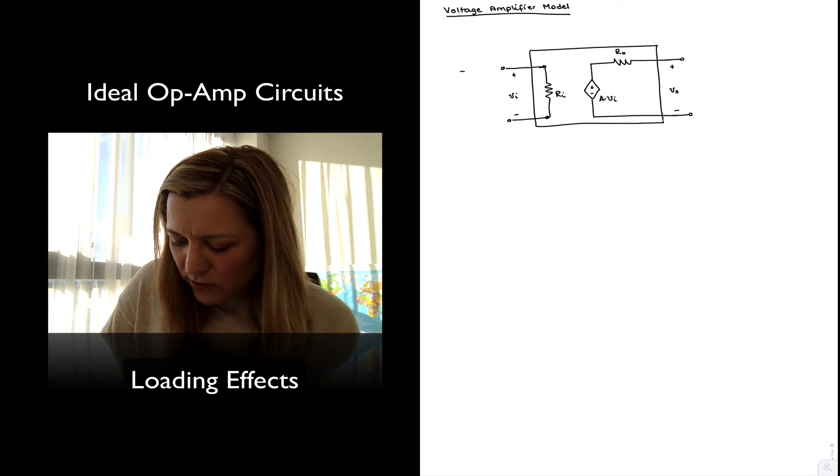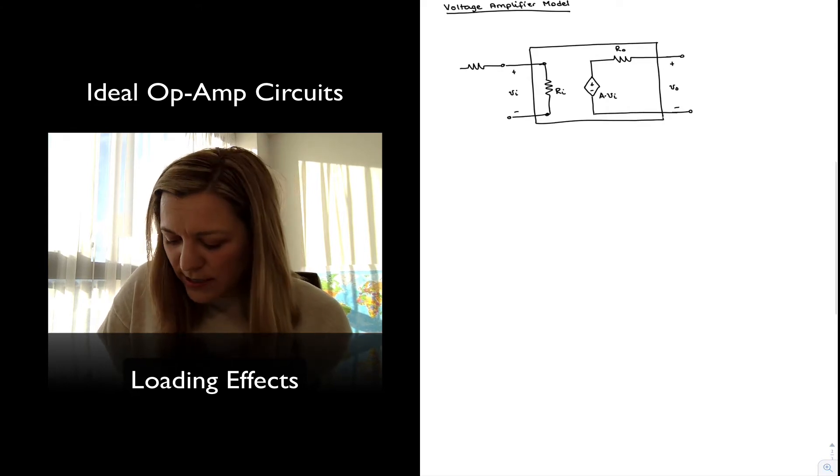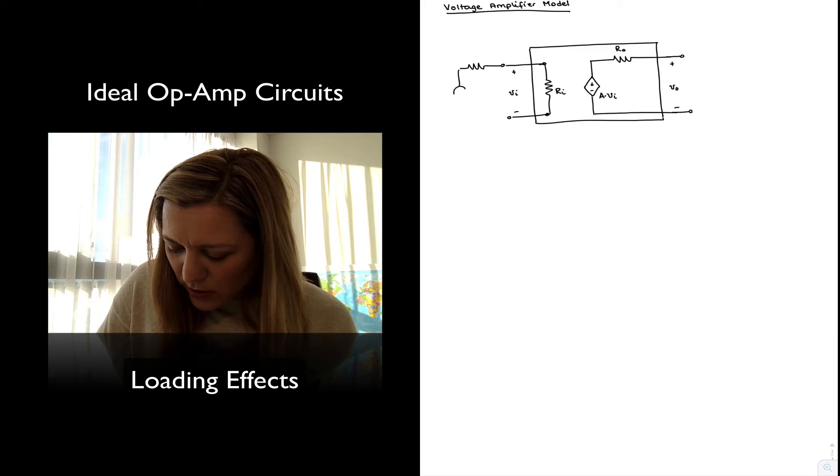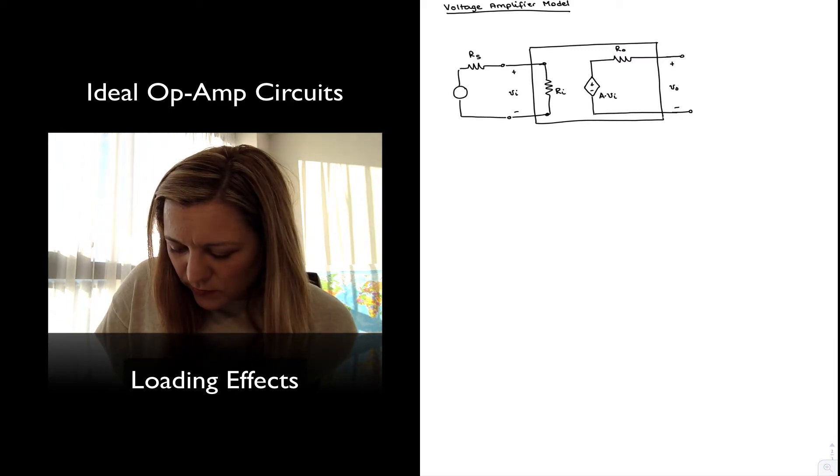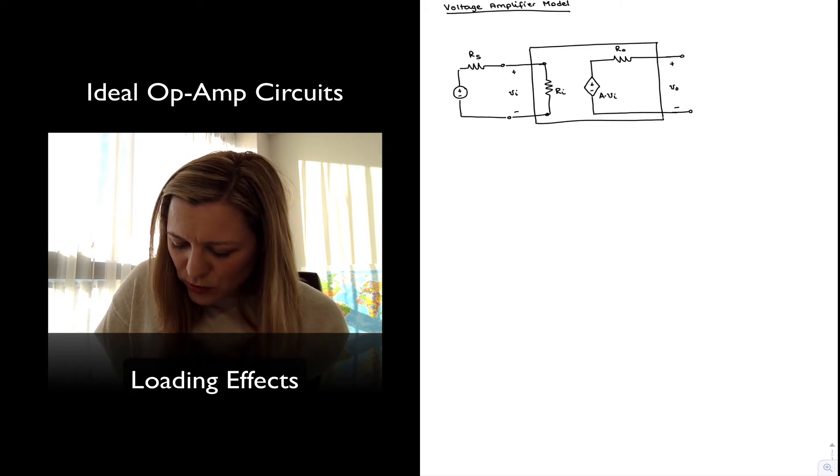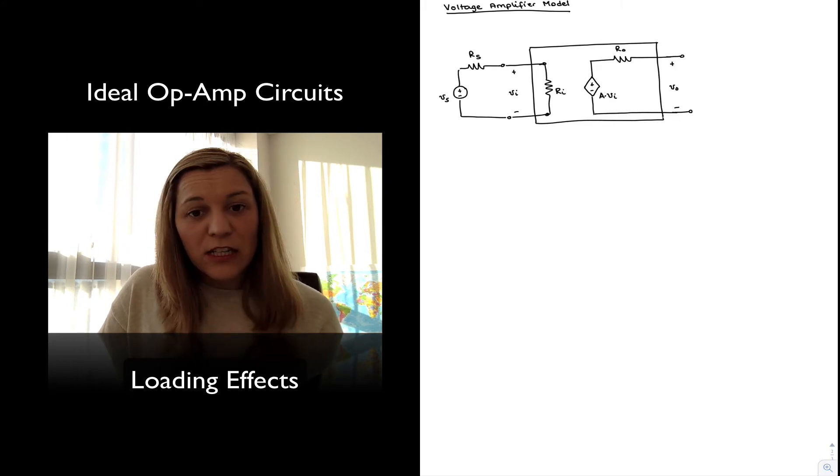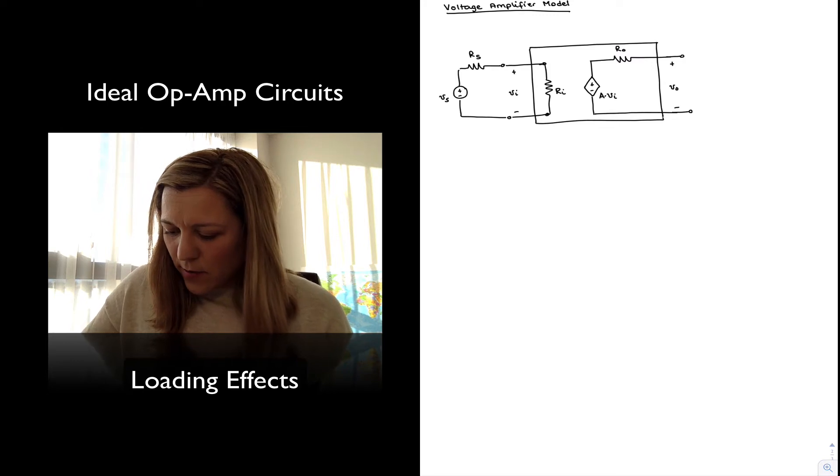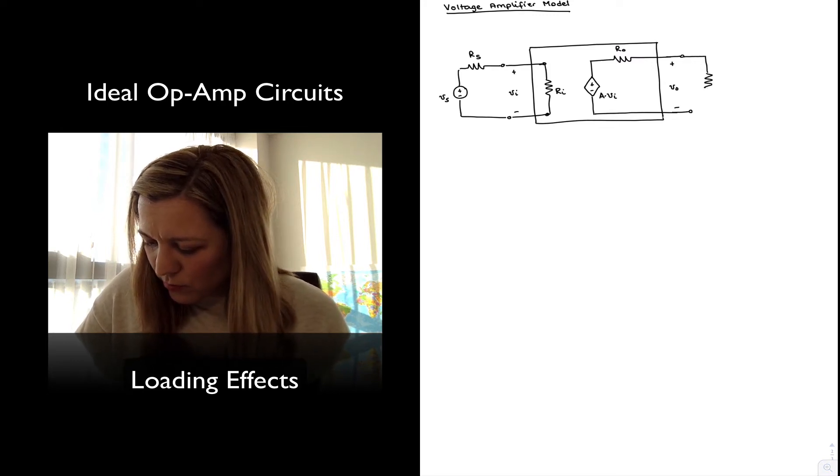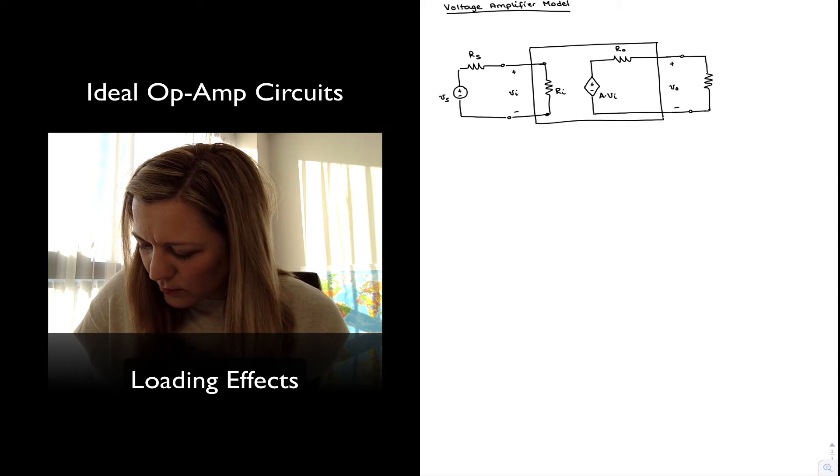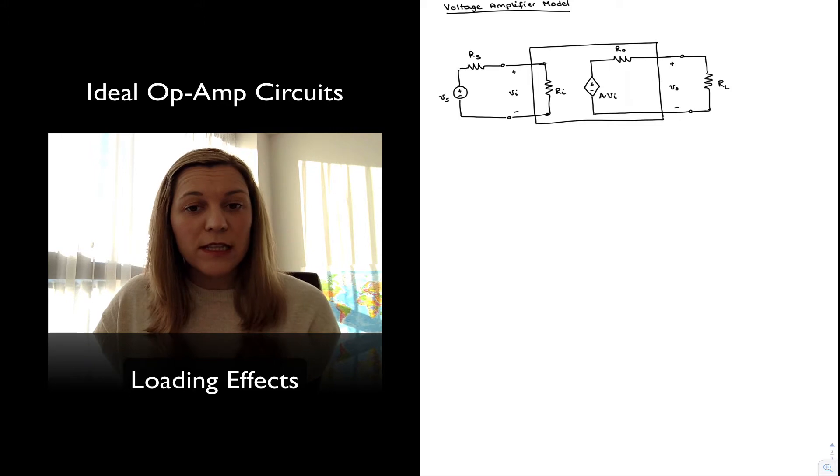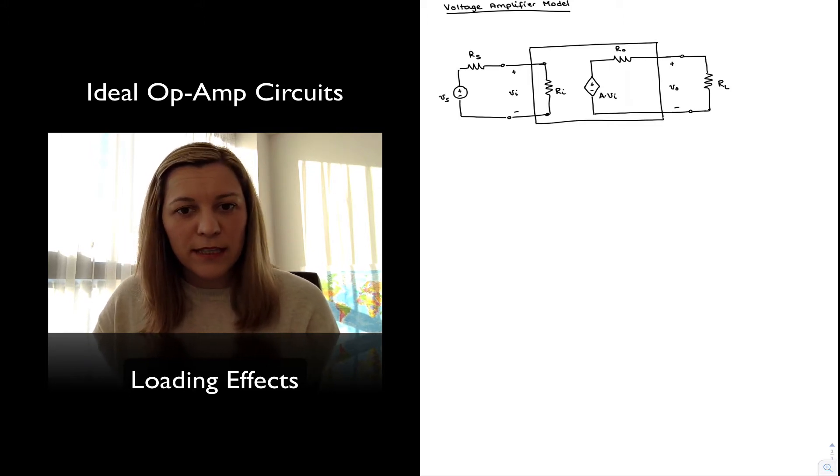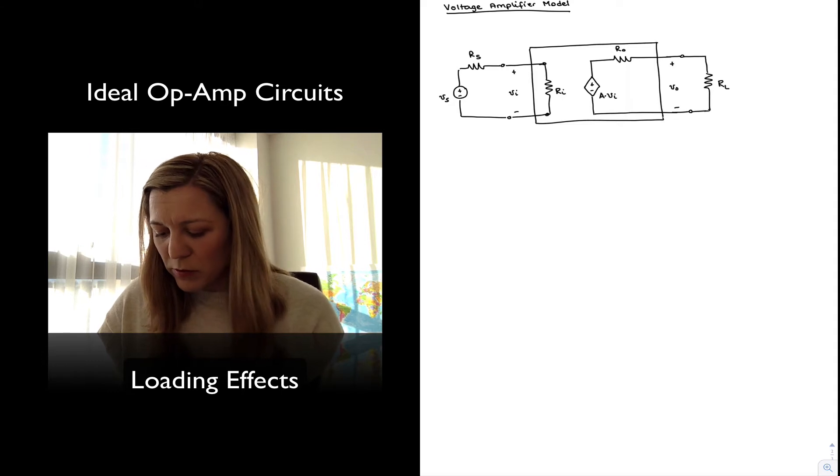We can represent a signal source, a voltage signal source, via a Thevenin equivalent, meaning a voltage source in series with a resistance. I'm going to refer to this as VS, the signal source. At the output, I'm going to connect a load, which I'm also representing via a model. I'm modeling it as a resistor, basically the input resistance of whatever I'm connecting there at the output. That will be represented by RL.